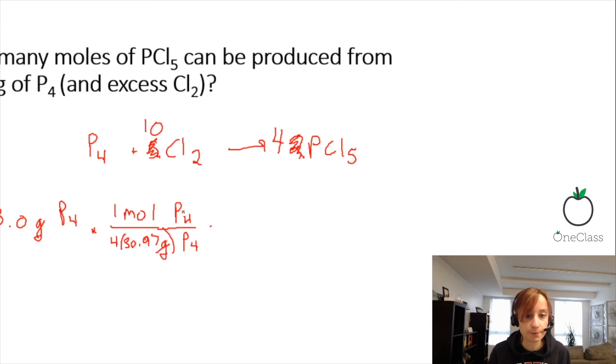So if I want to convert moles of P4 to moles of PCl5, we have 4 more PCl5 units than we have of P4. So we're going to have 4 moles of PCl5 over 1 mole of P4. This is why it's important to keep track of your compounds. Because now I can get rid of moles of P4.